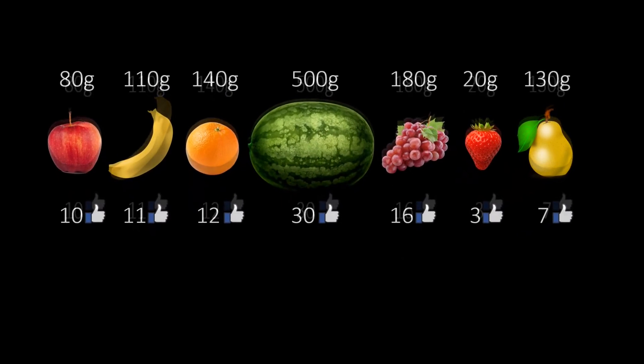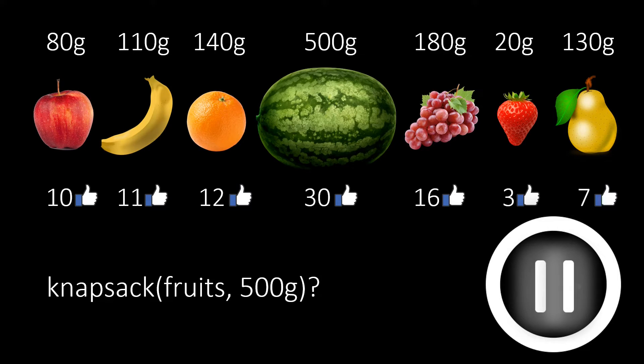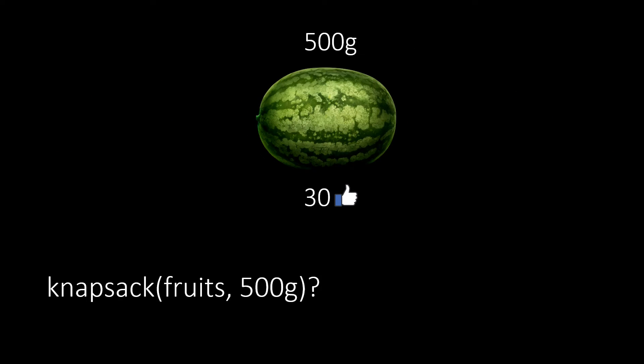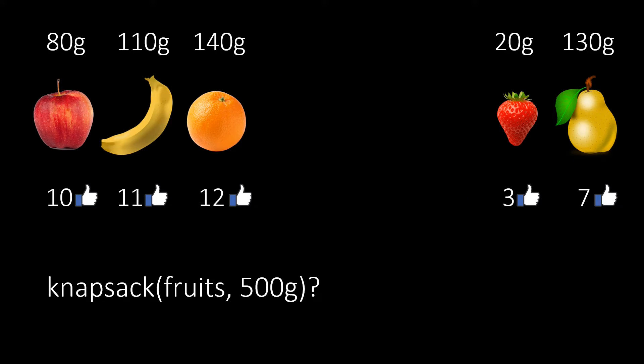This is a good point to pause and think about the problem. We could simply take the melon as it's exactly 500 grams with a value of 30. But probably you found a better solution by taking some of the smaller fruits. For instance, all these smaller fruits have a total weight of 480 grams, which is within our capacity limit, however together they are more valuable than the melon with a total value of 43.